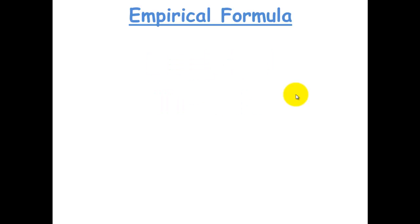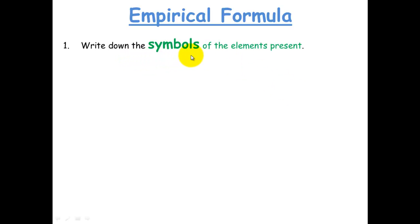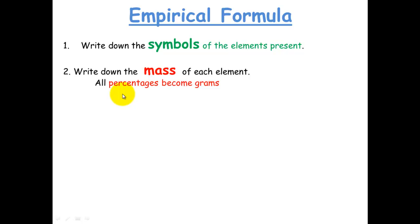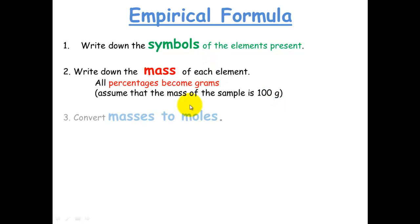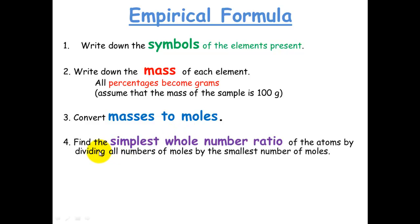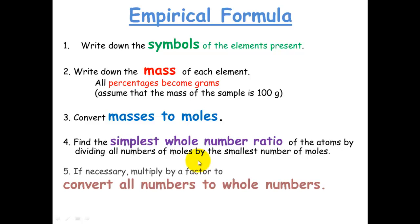Let's look at how we can derive the empirical formula from given information. There are a few steps: Step 1 — write down the symbols of the elements present. Step 2 — write down the mass of each element; if given as percentages, just convert to grams. Step 3 — convert masses to moles, since these ratios are mole ratios. Step 4 — find the simplest whole number ratio by dividing all mole values by the smallest number of moles. Step 5 — if necessary, convert all numbers to whole numbers.